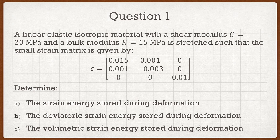The question wants us to do three different things. The first is to determine the strain energy stored during the deformation — this is going to be the main part of the question. Once you guys do part A, parts B and C are actually relatively simple. Part B wants the deviatoric strain energy stored during deformation, and part C asks for the volumetric strain energy stored during deformation. This reminds us of when we talked about stress, where the stress tensor can be decomposed into a deviatoric and a volumetric stress tensor — and with strain energy we can do the exact same thing.